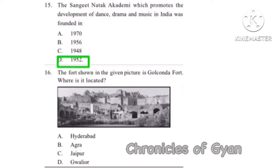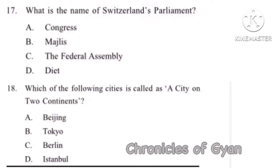Question 16: The fort shown in the given picture is Golconda fort — where is it located? The image shown is of Golconda fort, and it is located in Hyderabad. Option A.